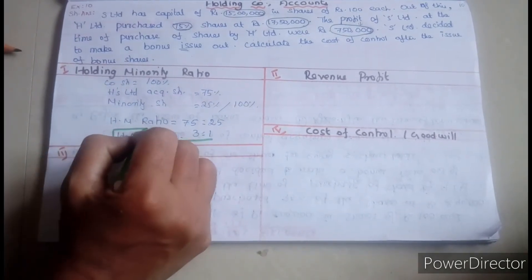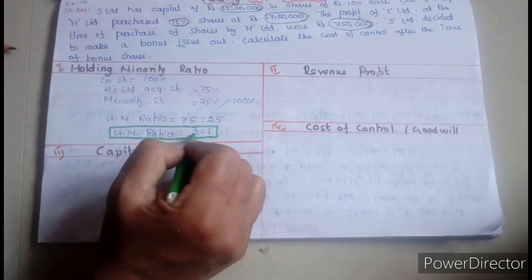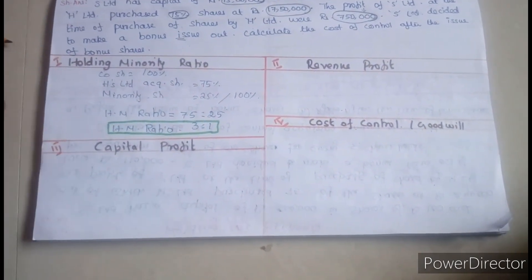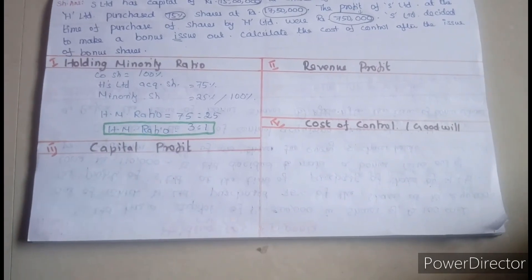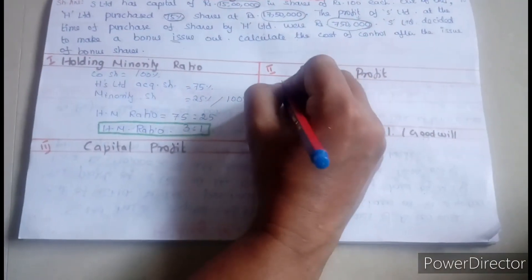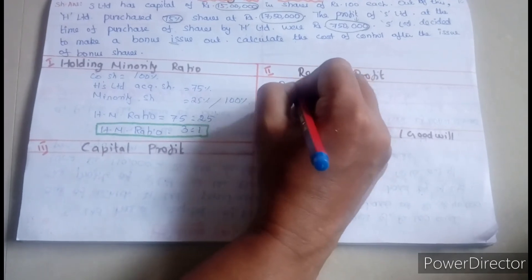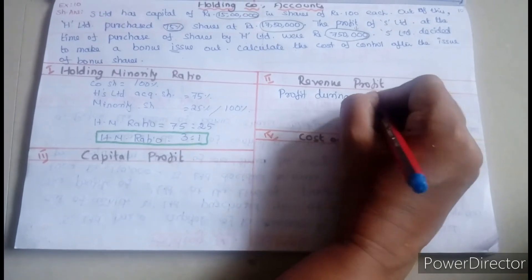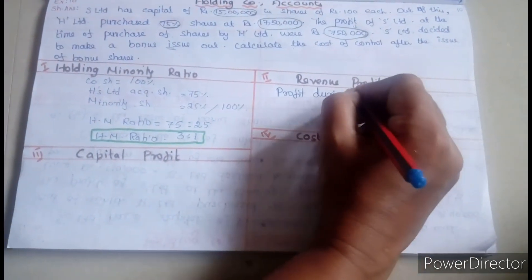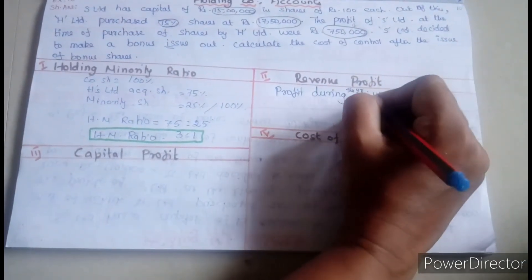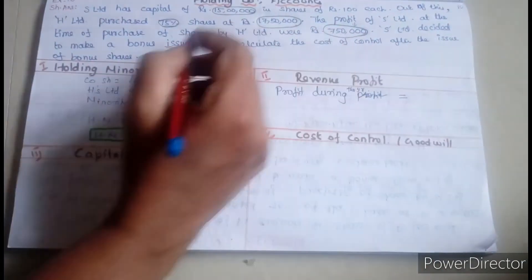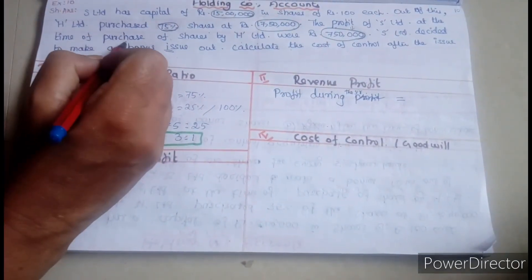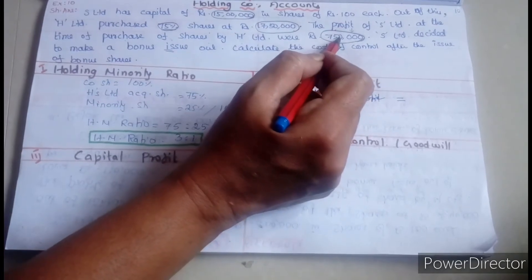This is the holding to minority ratio. Now the problem items and this ratio. Profit: holding company percentage versus minority holders. We call this revenue profit — profit during the year. The profit of S Limited at the time of purchase of shares by H Limited was 7,50,000.